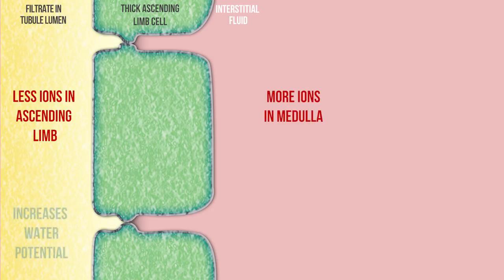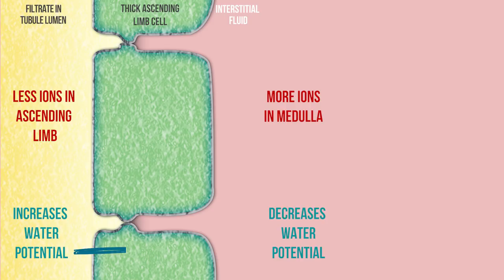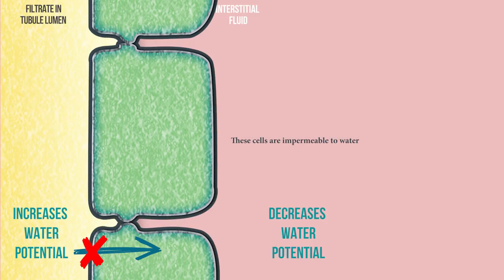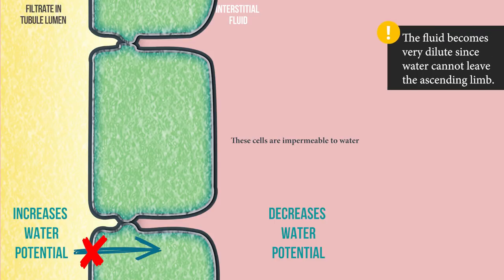This increases the water potential of the fluid inside the nephron and decreases the water potential outside it. Normally, water would follow by osmosis the movement of these ions into the cells, but this cannot occur because the cells are impermeable to water. Therefore, water cannot pass out of the nephron at this point, and the fluid in the ascending limb becomes very diluted by the time it reaches the distal convoluted tubule.